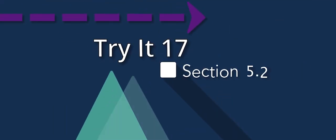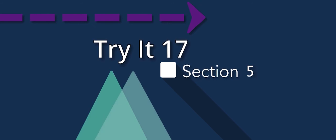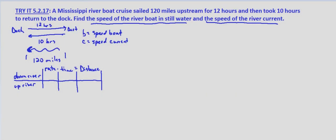In this problem we're looking at a classic scenario of uniform motion, a boat traveling up and downstream. We're told that a Mississippi riverboat cruise sailed 120 miles upstream for 12 hours and then took 10 hours to return to the dock.